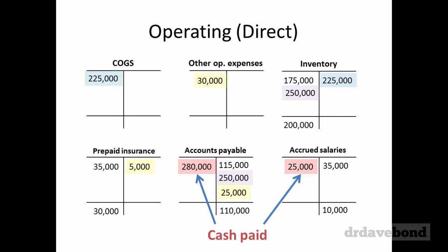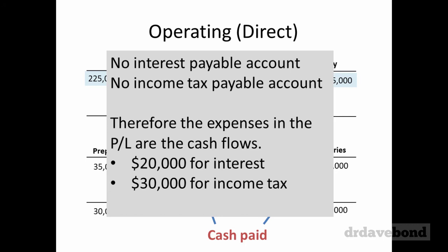There are a couple of other operating cash flows — interest and tax. In the question information, there are no interest payable accounts and no income tax payable accounts, which means any profit and loss effects are cash effects. So the $20,000 of interest expense is actually paid this year, and the $30,000 for income tax is actually paid this year.